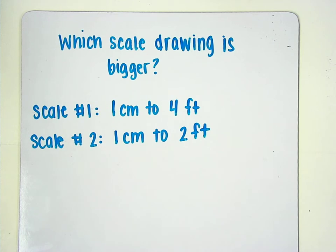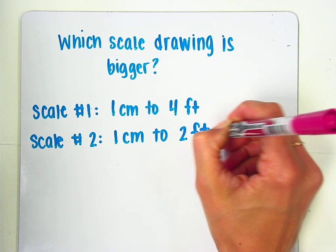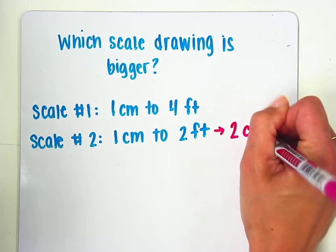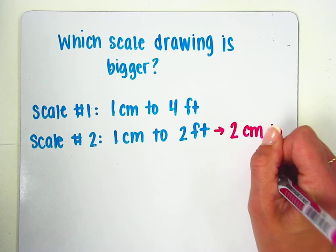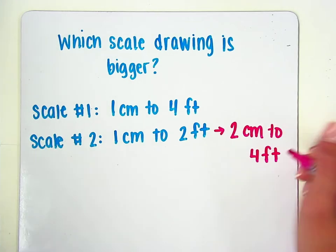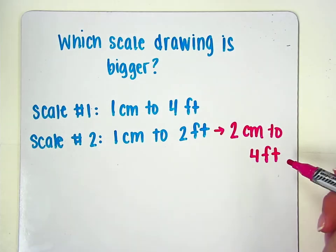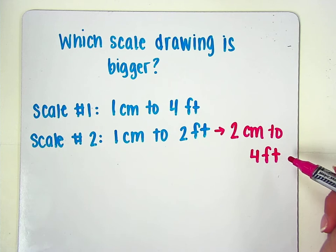So when we look at these scales we know that in this case we need 2 centimeters to represent 4 feet in real life. So we would need twice as many centimeters to represent 4 feet in this scale drawing. So we would need to have our scale drawing be twice as big.